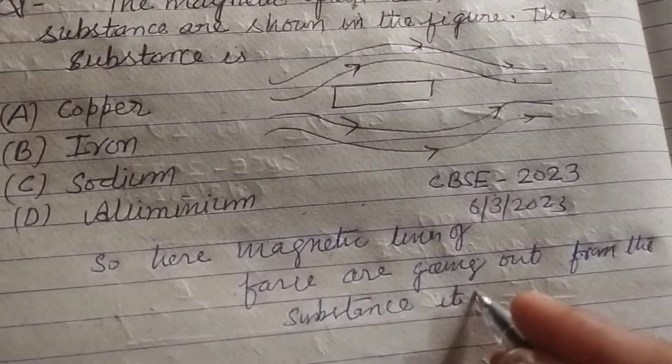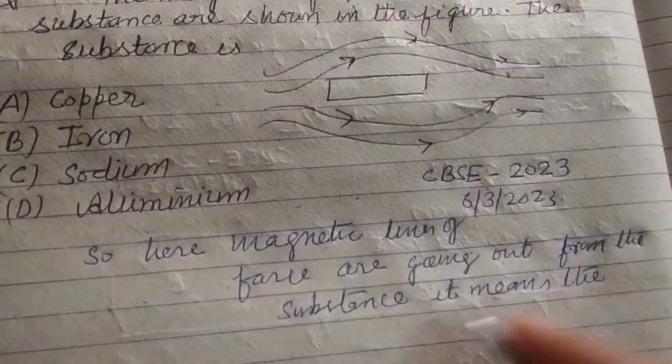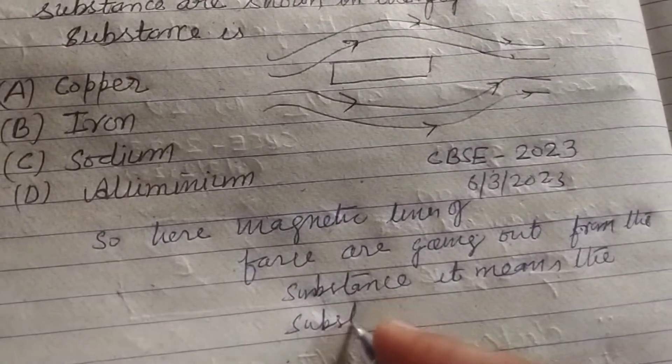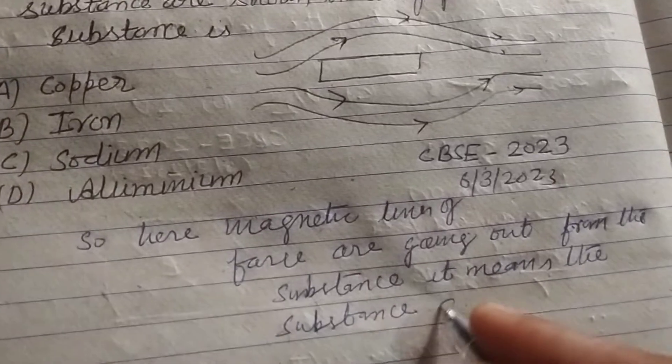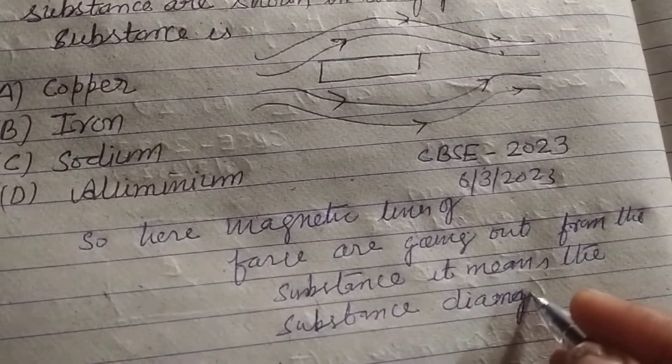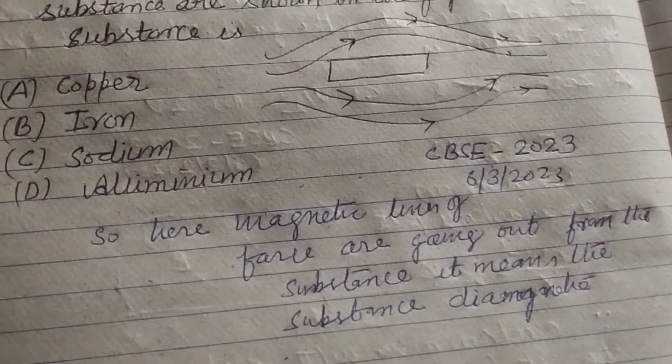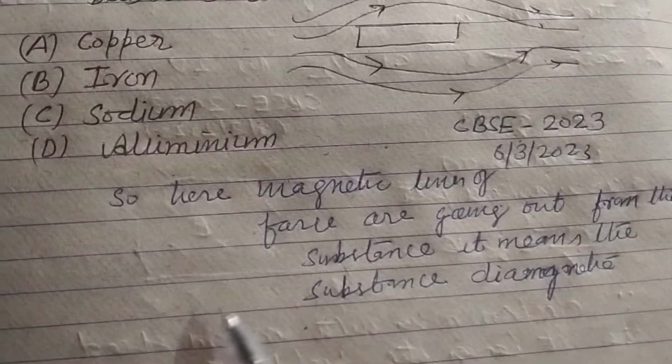It means the substance is diamagnetic, which cannot attract the magnet.